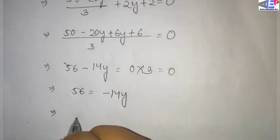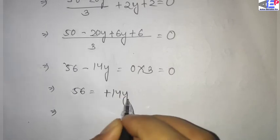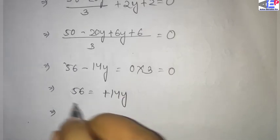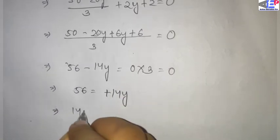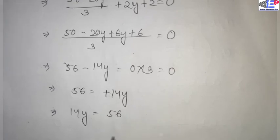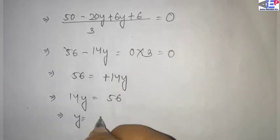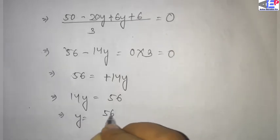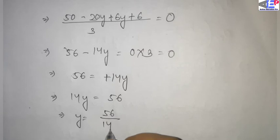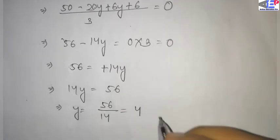Sorry — minus 14y is equal to minus 14y. So I will change the difference: 14y is equal to 56. So y is equal to 56 divided by 14. Answer is 4.